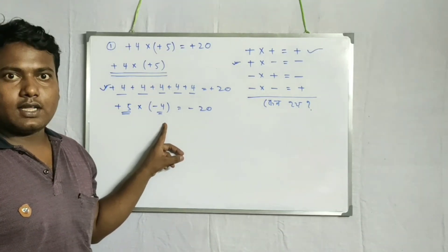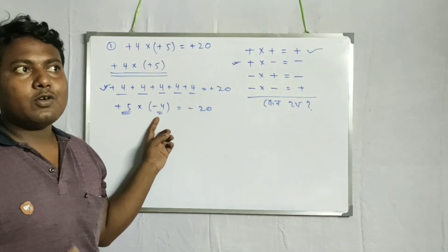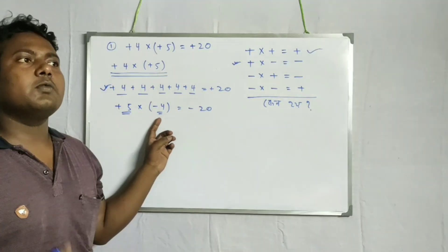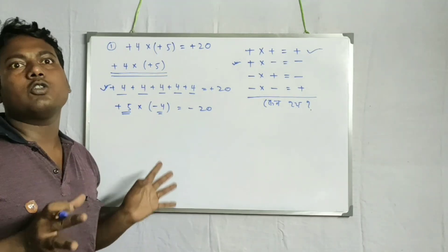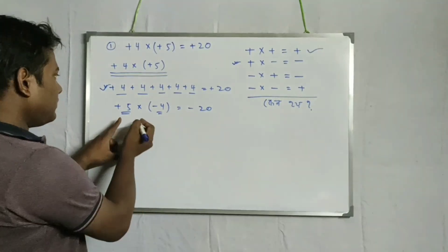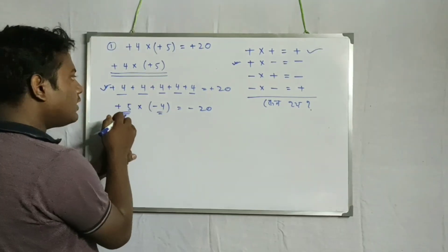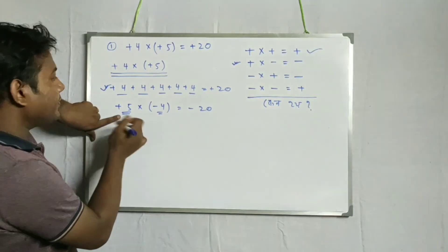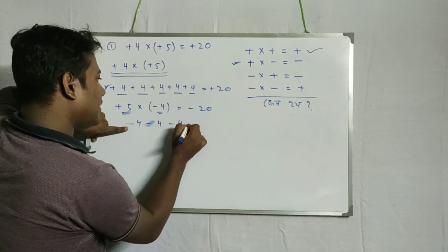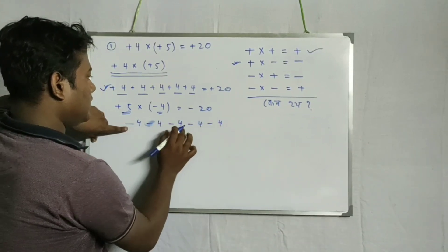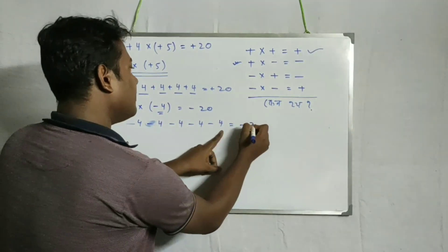We asked the answer to the question. The answer is minus 4 — minus 4, minus 4, minus 4, minus 4, minus 4 — giving minus 20. That is negative.